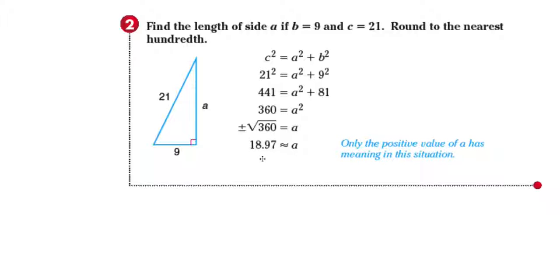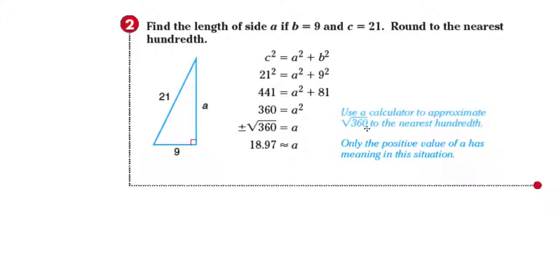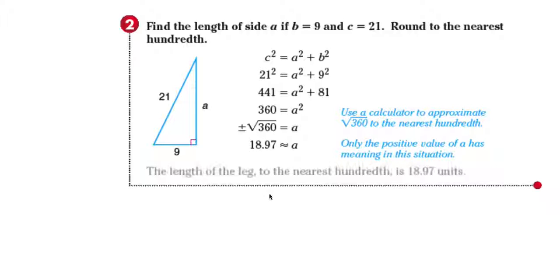We disregard the negative value of 18.97 because there is no such thing as a negative length, so only the positive value has meaning in this solution. We use a calculator to find 18.97. So the length of the leg to the nearest hundredth is 18.97 units.